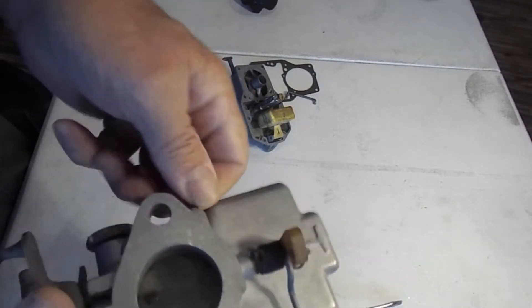There's your hole in the bore for the idle mixture. Take out the idle mixture screw and look through the hole and make sure it's clear, not stopped up with something.